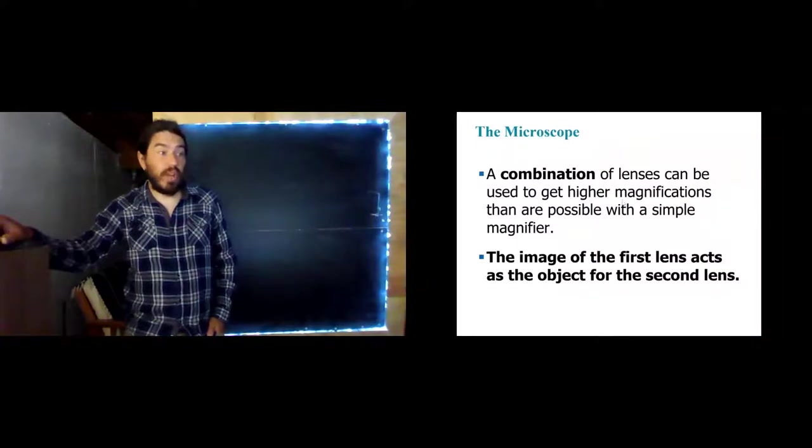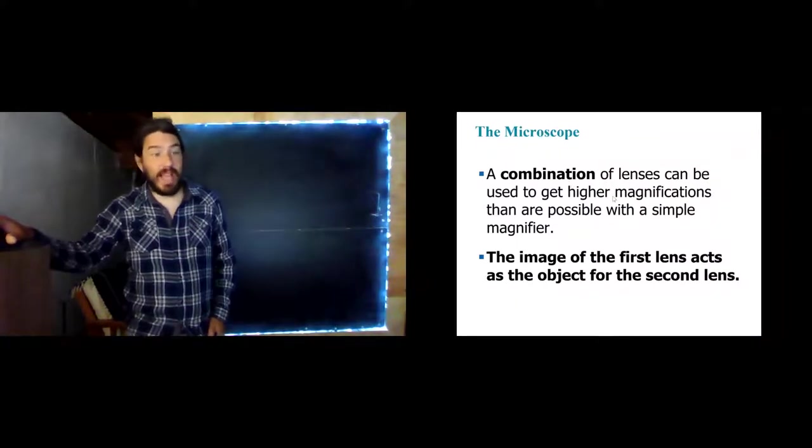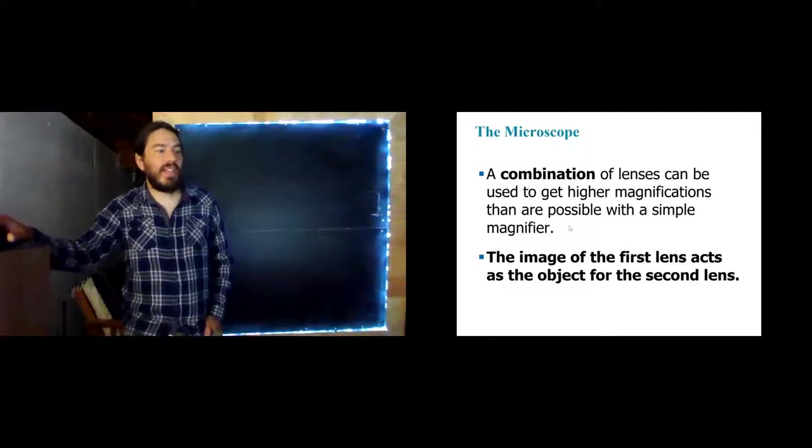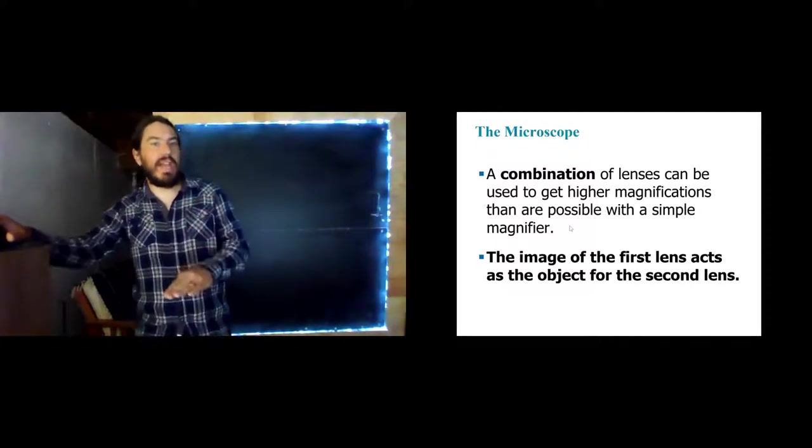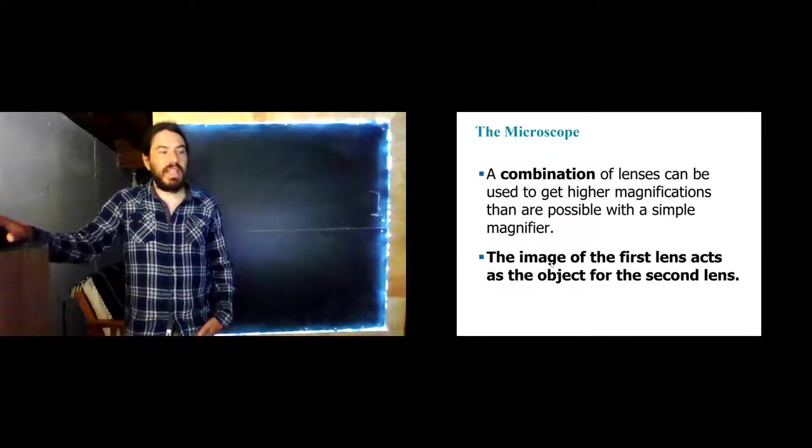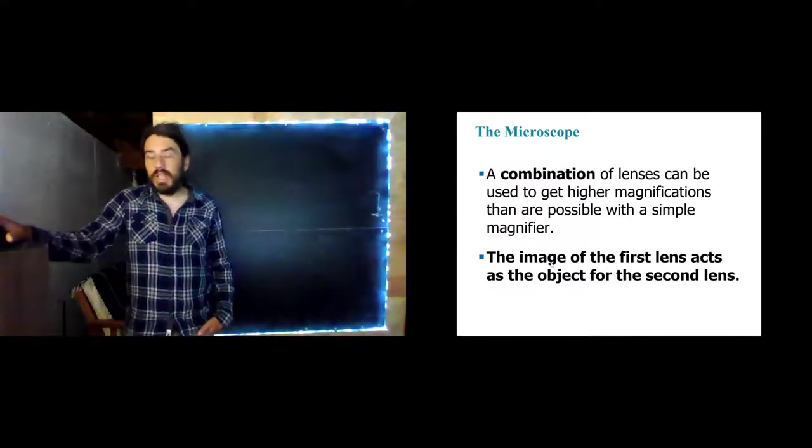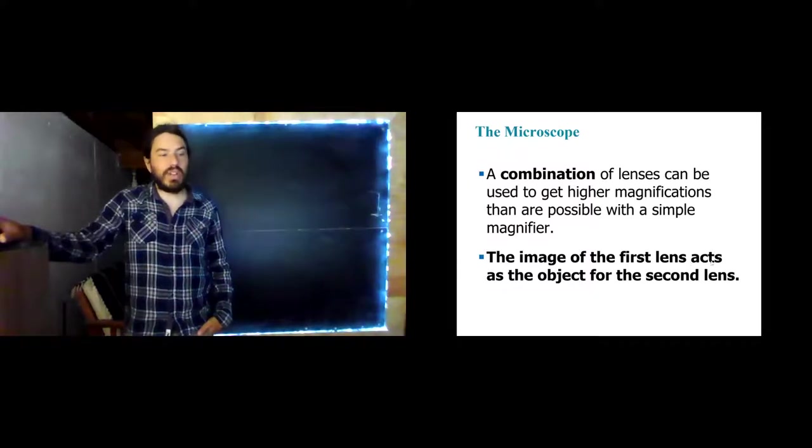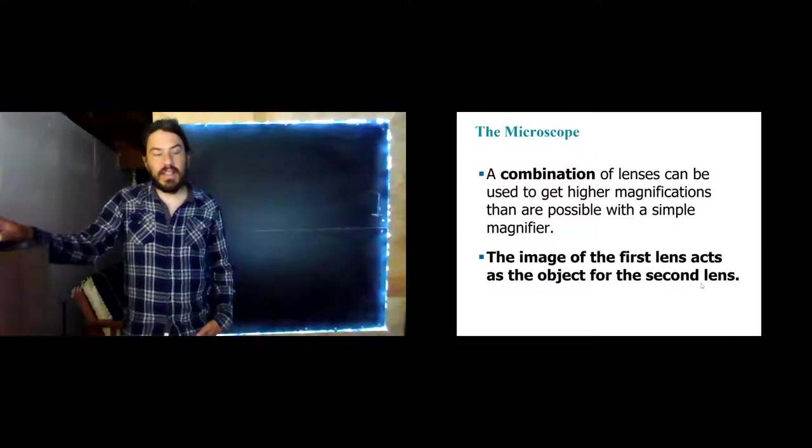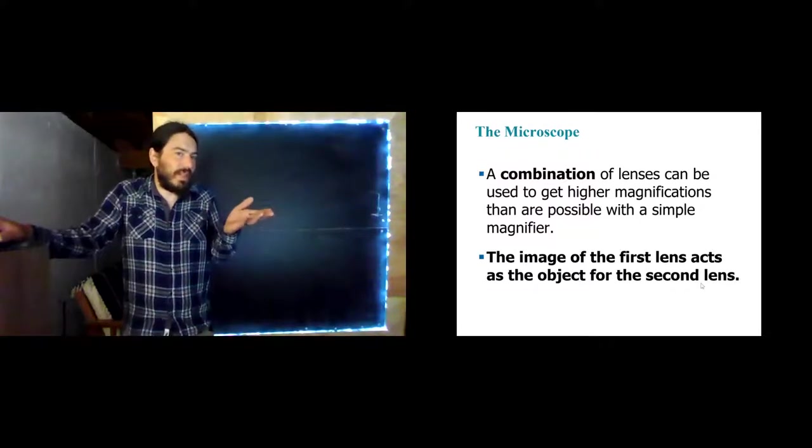So a microscope really is just a couple of magnifiers put together. A combination of lenses can get magnifications that are much greater than the magnification that we might get from just a single lens system. And in this case, in multiple lens systems, the image of the first lens acts as the object for the second lens. Now, we already kind of did that when we talked about the eyeball.